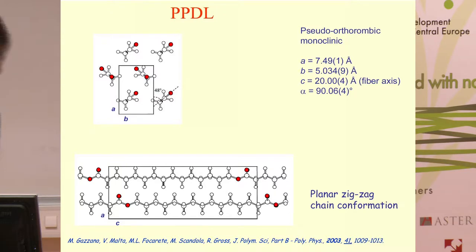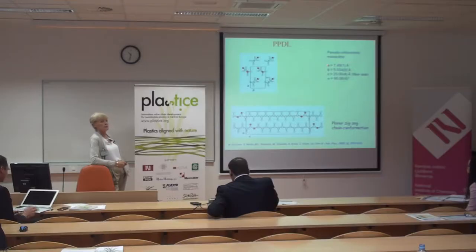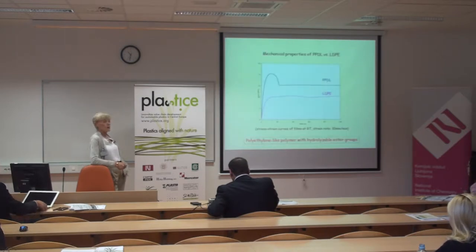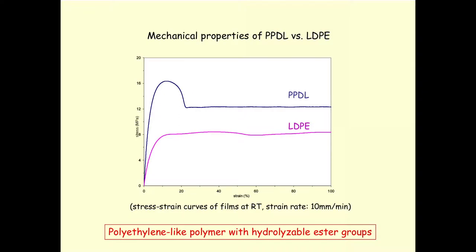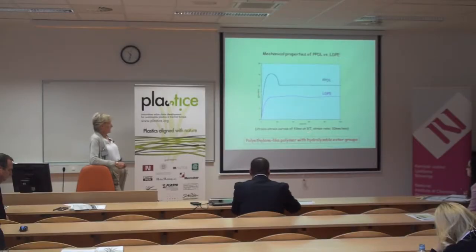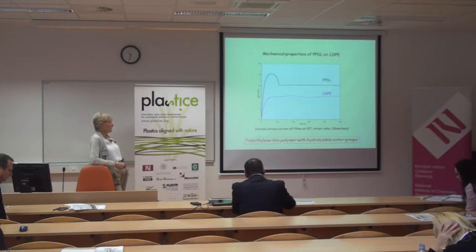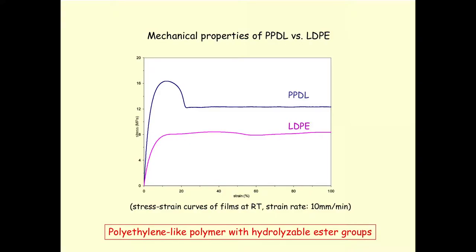We determined the unit cell parameters and showed that the polymer crystallizes in a planar zigzag conformation with a unit cell quite similar to that of polyethylene — the A and B parameters are very close to those of polyethylene. From the stress-strain curves, we can say that it behaves similarly to low-density polyethylene, with a very large strain at break, well above 100%.